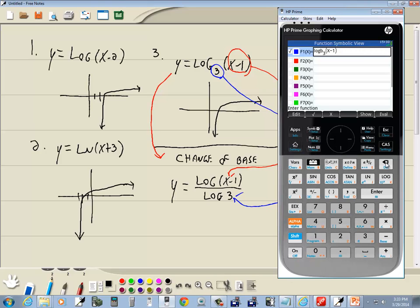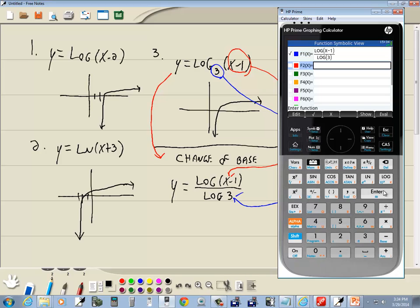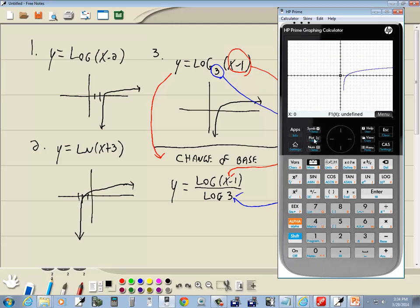We'll go back to my symbol, do a backspace. Now I'm going to press my log button. So press log. Then I'll put in my x minus 1. I'm going to press my right arrow key to get out of the parentheses. And then I'll do a divided by. And I'll push my log again. And then I'll put 3 in. And then press enter. And now if I press plot, you should get the same graph as what we just did.